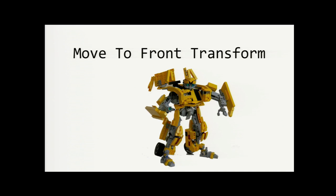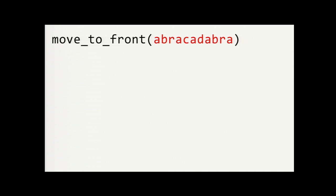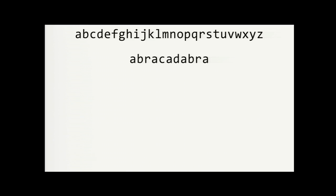Another simple but effective transformer is the move to front transform. Here's how this transform works. So we have our now very familiar input data, abracadabra, and also an array containing the alphabet of all symbols that are possible in the input. We record the position of each symbol in the alphabet. And then we move it to the front of the alphabet. So A is at position one, and it's already at the front, so we don't need to move it. B is at position two, and then move it to the front. R is all the way over at position 18. Move it to the front. A is now at position three. So we record that. Move A back to the front. C is at position four. Move it to the front. And so on. Until we've transformed the entire word.